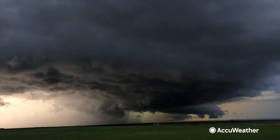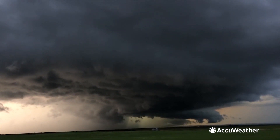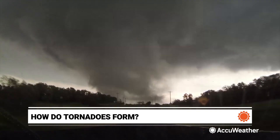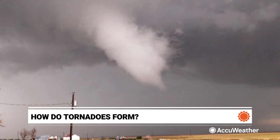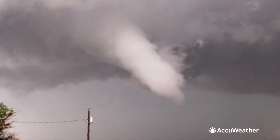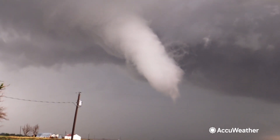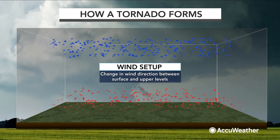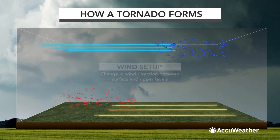It begins with the rotating supercell of a thunderstorm. Supercell tornadoes require several atmospheric ingredients to form. One is instability from heat and moisture that helps to strengthen the updrafts for those thunderstorms to form, while the other is the wind shear and the vertical lift from an opposing cold front.